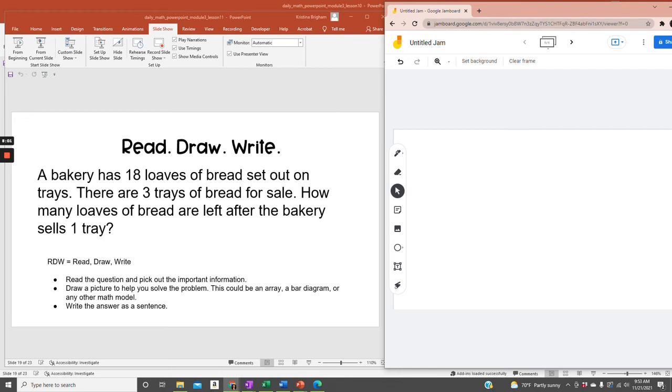So a bakery has 18 loaves of bread set out on trays. There are three trays of bread for sale. So if there are three trays, I want to have three boxes. And I know that there are 18 loaves in all.